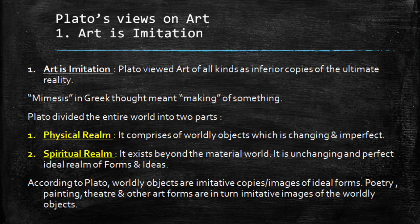Plato divided the entire world into two parts. The first was the physical realm that we can see in front of us — comprising worldly objects which are constantly changing and imperfect. The second was the spiritual realm, which cannot be seen; it exists beyond the material world and is unchanging, perfect — the ideal realm of forms and ideas. According to Plato, worldly objects are imitative copies or images of these ideal forms. All that is present in the spiritual realm is in original form, while things in the physical realm are copies of objects present in the spiritual realm.